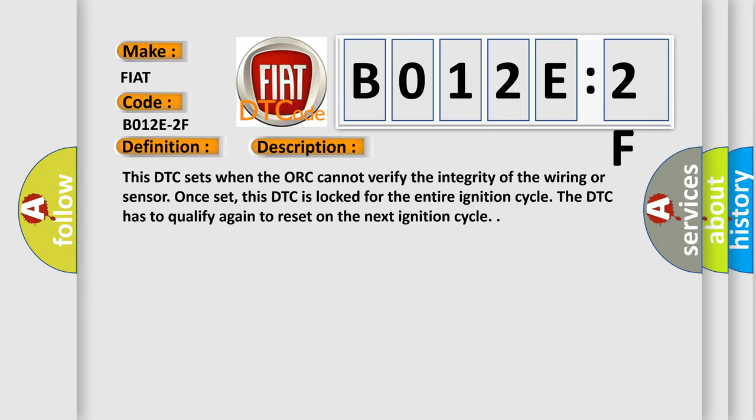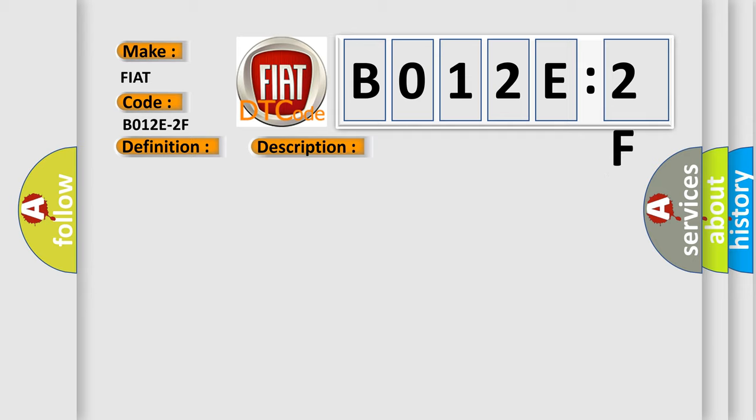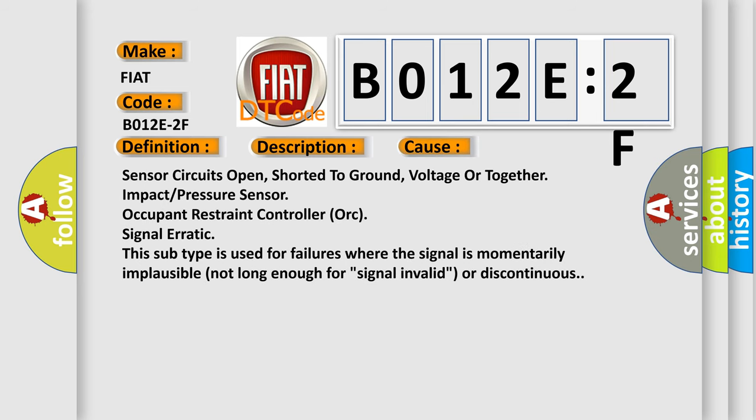This diagnostic error occurs most often in these cases: Sensor circuits open, shorted to ground, voltage or together impact pressure sensor occupant restraint controller ORC signal erratic. This subtype is used for failures where the signal is momentarily implausible not long enough for signal invalid or discontinuous.